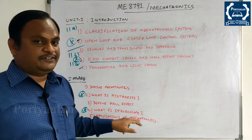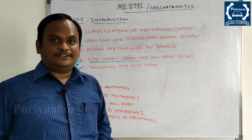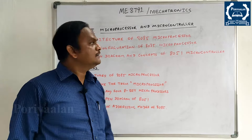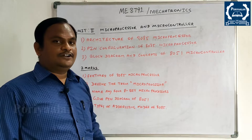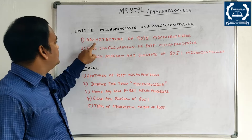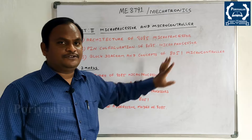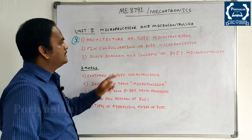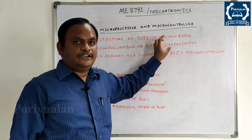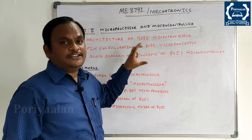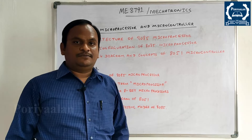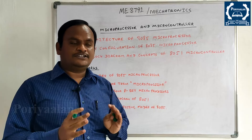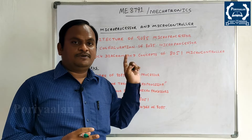Unit 2 is Microprocessor and Microcontroller. You can see the architecture of 8085 microprocessor. This is a very important question. The architecture of 8085 microprocessor circuit diagram is compulsory, and the elements of memory are completely repeated. You can see the same type of part 2 is different.